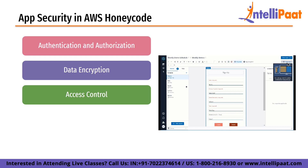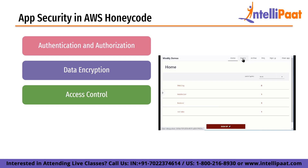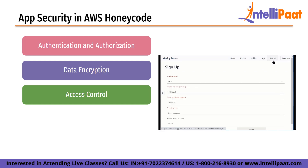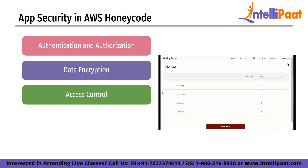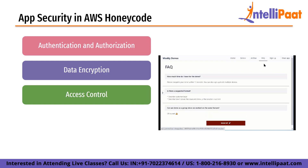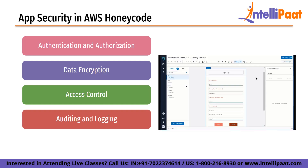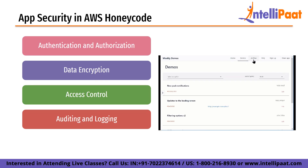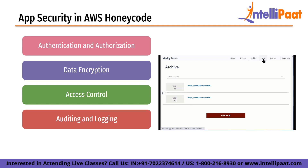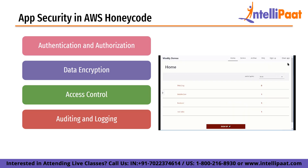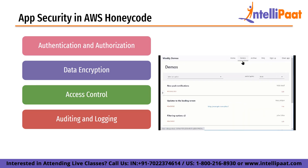Third is access control. Access control ensures that only authorized users can access the app and its data. In Honeycode, access control can be implemented using the built-in access control mechanism or by integrating with an external access control provider. Access control should be defined based on the roles and responsibilities of users. Next is auditing and logging, which enable developers to track user activity and identify security threats. In Honeycode, auditing and logging can be implemented using built-in mechanisms or by integrating with an external logging provider, and logs should be monitored regularly.